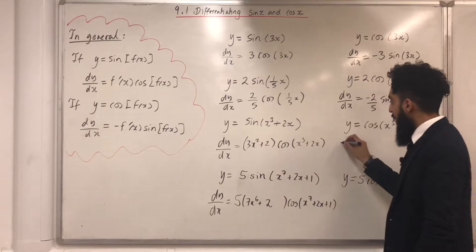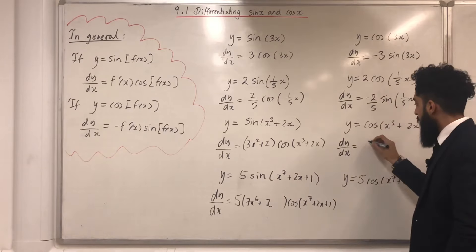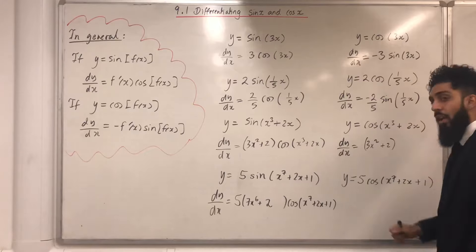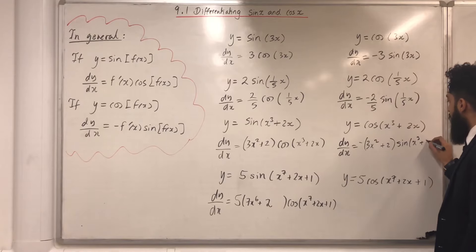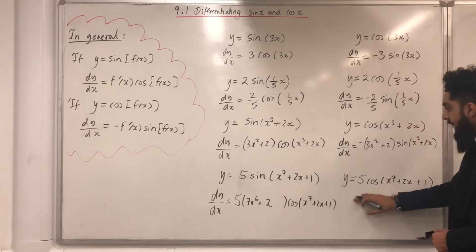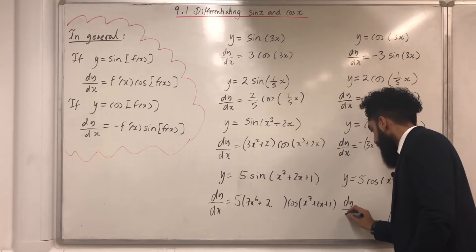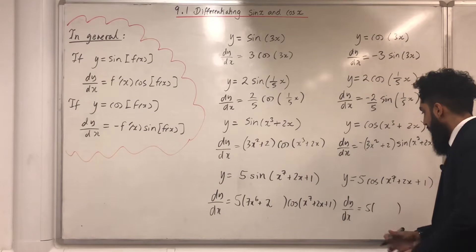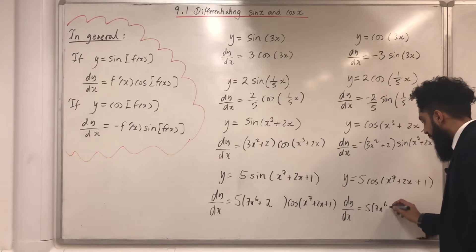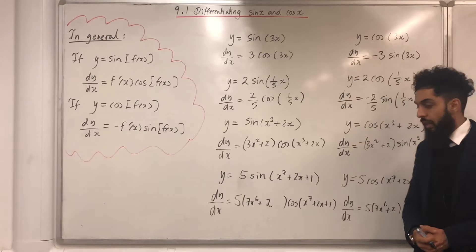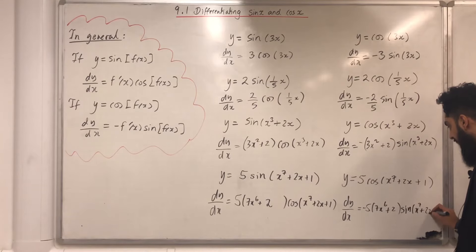For y equals Cos of x cubed plus 2x: differentiating x cubed plus 2x gives 3x squared plus 2, and Cos differentiates to minus Sine, so dy/dx equals minus 3x squared plus 2, multiplied by Sine of x cubed plus 2x. For y equals 5 Cos of x to the power 7 plus 2x plus 1: differentiating the polynomial gives 7x to the power 6 plus 2, and Cos goes to minus Sine, so dy/dx equals minus 5 times 7x to the power 6 plus 2, multiplied by Sine of x to the power 7 plus 2x plus 1.